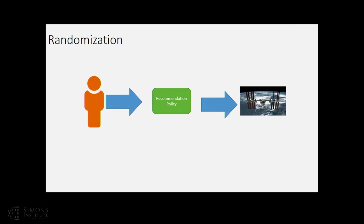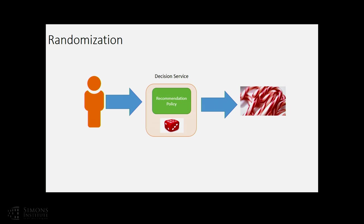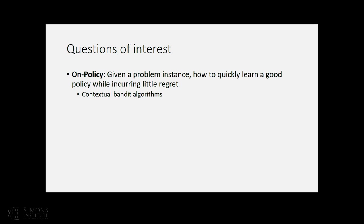The high-level idea is that in many cases, people have built some machine-learned recommendation rule to drive their system. We'll try to insert a small amount of randomization, maybe on top of this existing system. That means if they were always showing a space-related news story before, now with some probability they'll pick a different story. Crucially, when we do this randomization, we record not just the decisions taken but also the probability distribution we're inducing over actions, at least the probability with which we chose the recommended action.